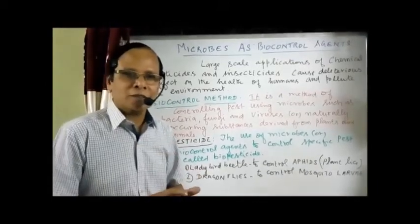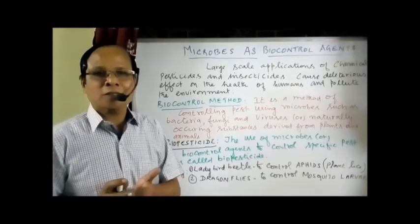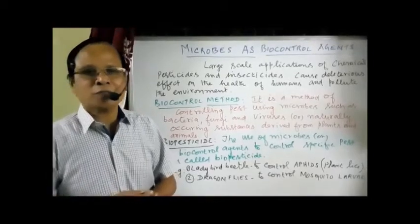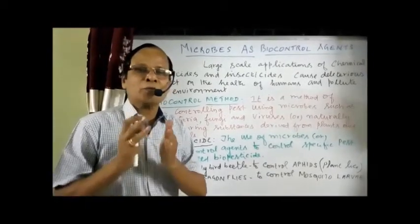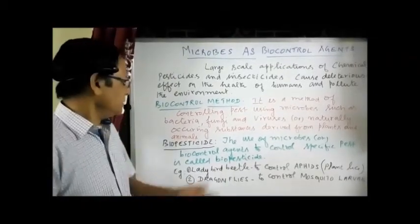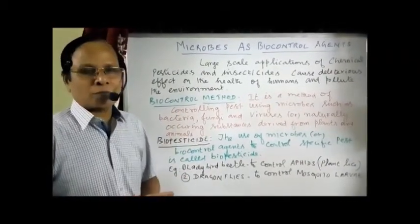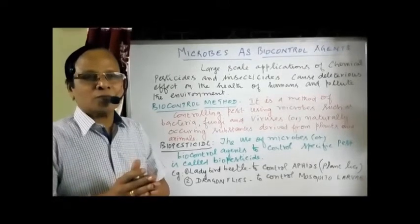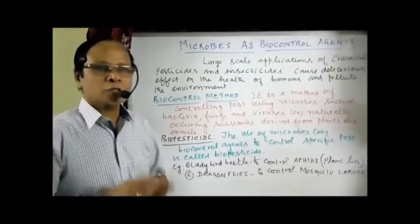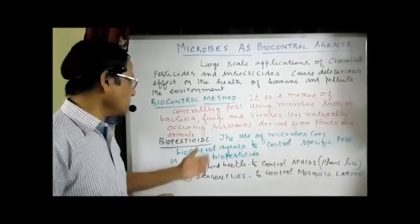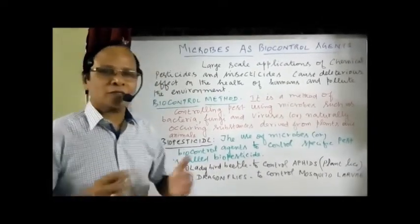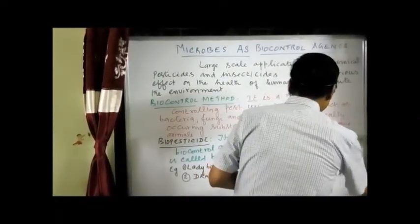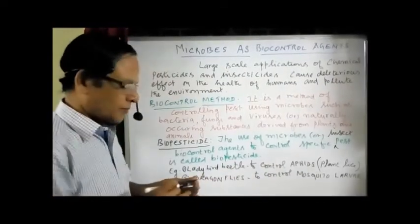Normally we have organic pesticides — chemical-based pesticides. They pollute the environment, causing damage to all living organisms. That's why we have biopesticides. A biopesticide uses microbes or biocontrol agents to control specific insect pests. Controlling specific insect pests using biocontrol agents is called biopesticide.